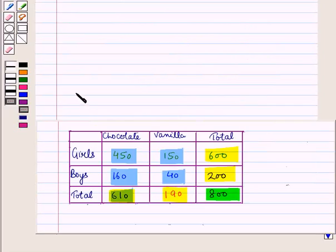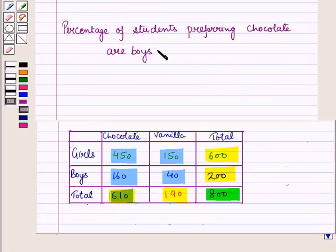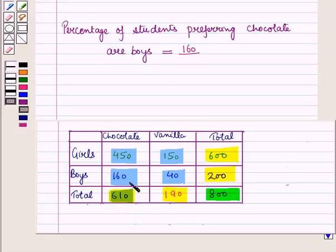Similarly, we can find what percent of students who prefer chocolate are boys. This is equal to the number of boys who prefer chocolate flavor, that is 160, upon the total number of students who prefer chocolate flavor, that is 610, into 100. This is equal to 26.2 percent.